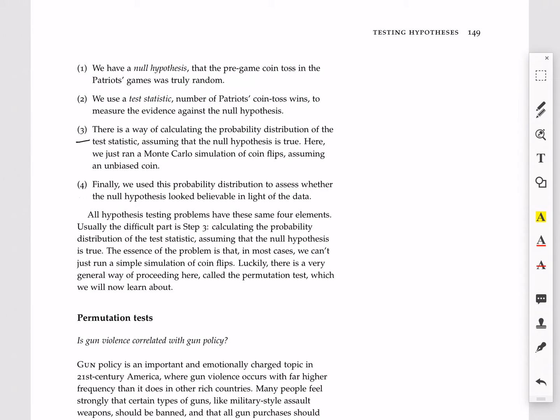So if you're thinking about the steps of hypothesis testing, all four of these steps: specifying a null hypothesis here in step one; in step two, specify a test statistic, in this case, the number of wins; in step three, simulate or calculate in some other way the probability distribution of the test statistic, assuming that the null hypothesis is true. And then finally, use that probability distribution for context to see whether your data is consistent or inconsistent with the null hypothesis.